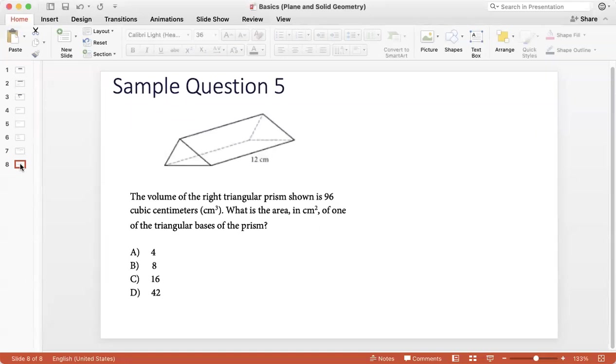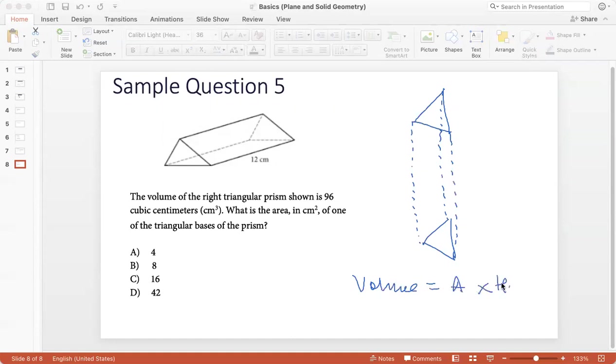Sample question 5. The volume of the right triangular prism shown is 96 cubic centimeters. What is the area in centimeters squared of one of the triangular bases of the prism? So this question is where we use the concept of the volume that we discussed. So let's say I put it in a vertical position. So how would this look in a vertical position? I have a triangle here and I have a triangle here and this is how the sides will be joined.